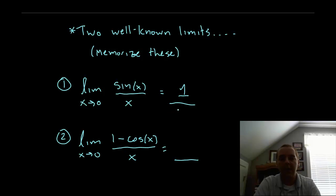Let's just memorize that quantity. And similarly, the limit as x approaches zero for one minus cosine x over x, that limit will be zero.